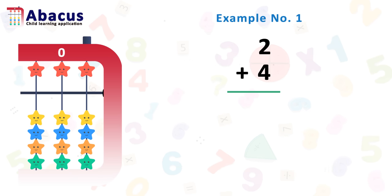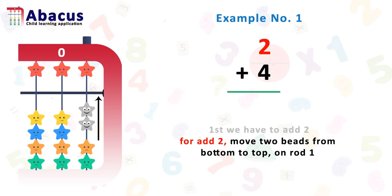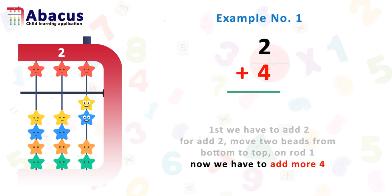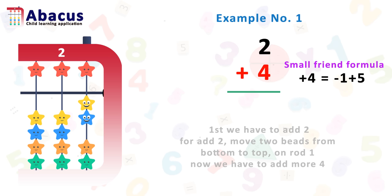Example number 1: 2 plus 4. First we have to add 2. To add 2, move 2 beads from the bottom to the top on rod 1. Now we have to add 4 bits. On the bottom we have just 2 beads and we need 4, so here we have to use the small friend formula. Plus 4 is equal to minus 1 plus 5.